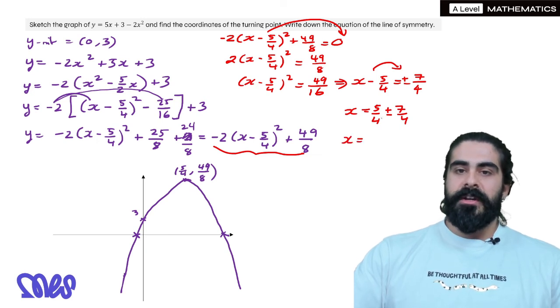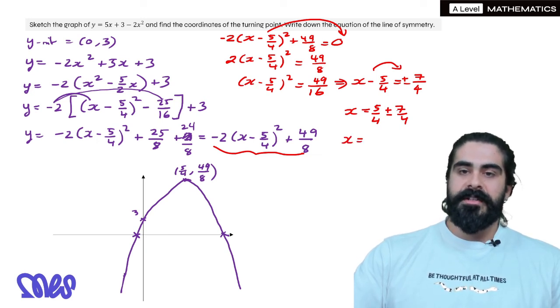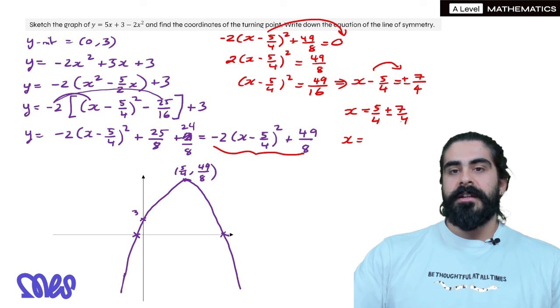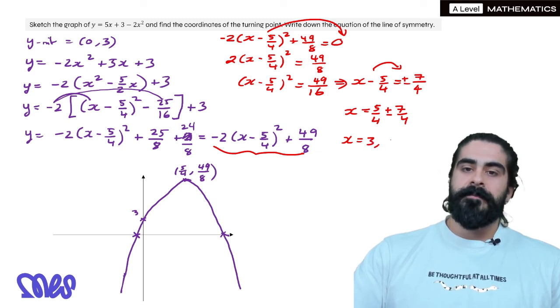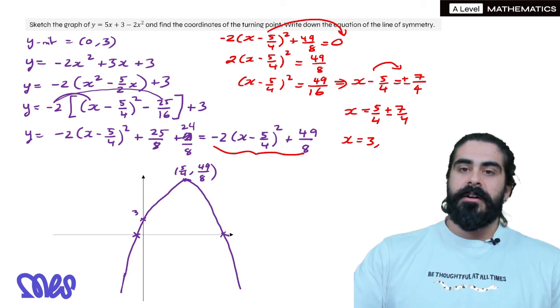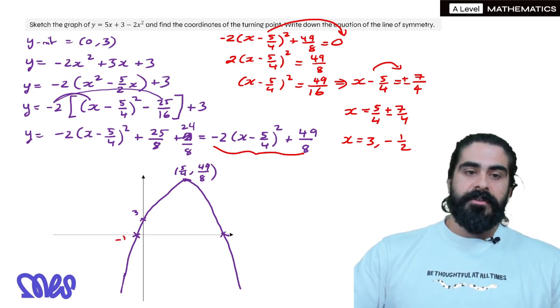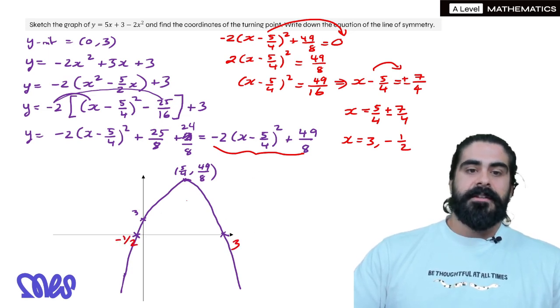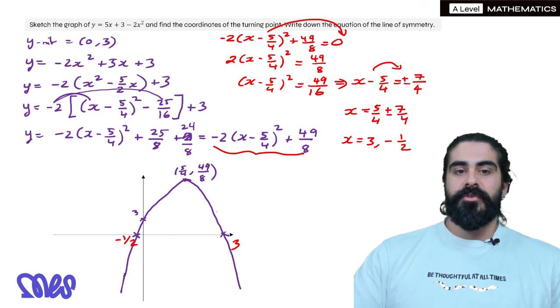Then we just read. So we're going to do 5 plus 7, which is 12 divided by 4 is 3. Then we're going to do 5 minus 7. 5 minus 7 is minus 2 over 4 is minus a half. And that is where the graph crosses the x-axis. And this is our final solution.